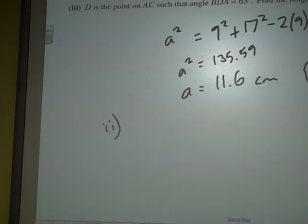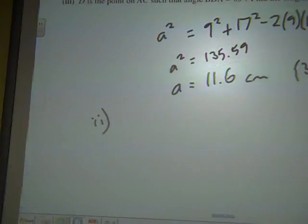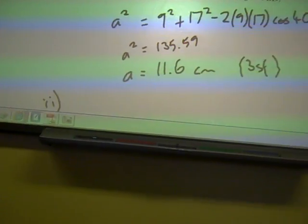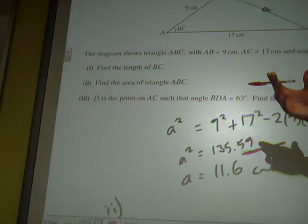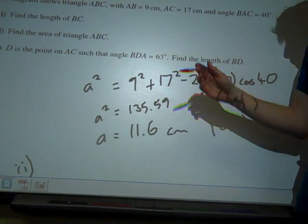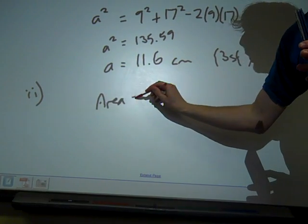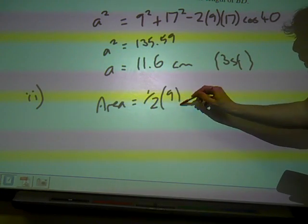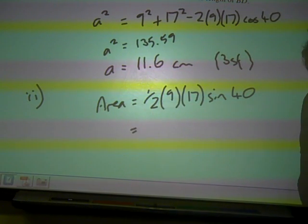Part two wants us to find the area of the triangle. We don't need side A straight away for this. Our formula for the area of the triangle is: if we've got an angle and the two sides adjacent to it, that's all we need. So the area of the triangle is going to be a half times the two sides adjacent to the angle — so 9 times 17 — times the sine of the angle between them. So a half times 9 times 17 times sine of 40.